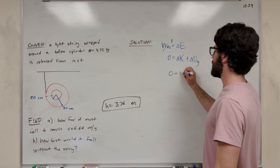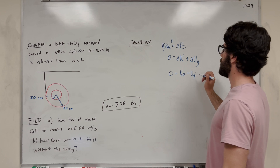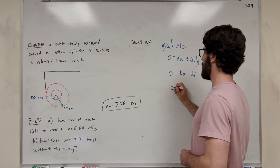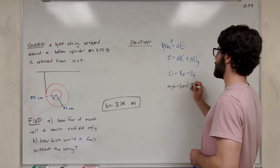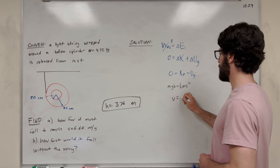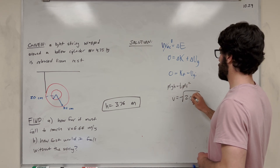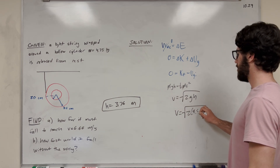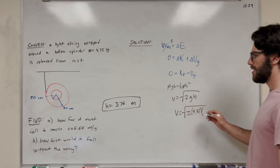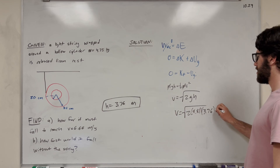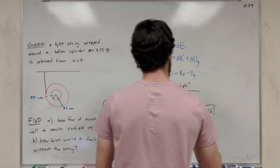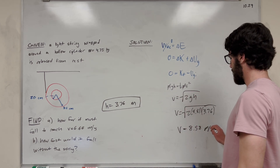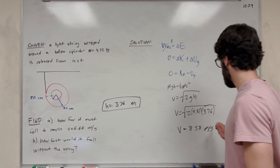This becomes K-final minus UG-initial equals zero, so mass times gravity times height equals one-half times mass times velocity squared. The masses cancel, giving us velocity equals the square root of two times gravity times height. Plugging in two times 9.81 times 3.76 meters, we get that velocity is 8.58 meters per second.